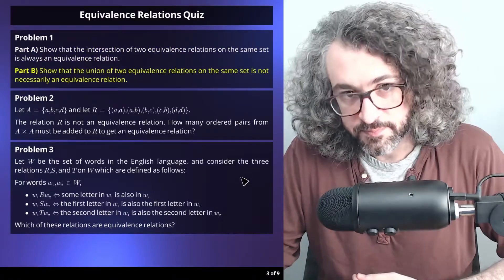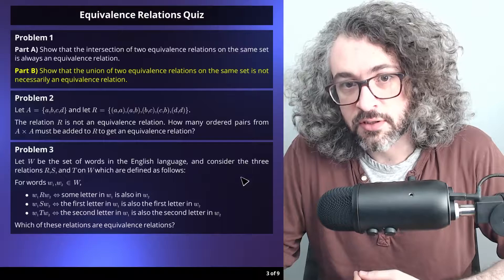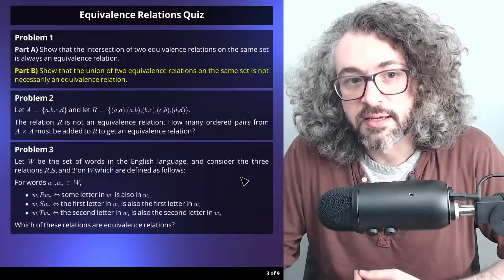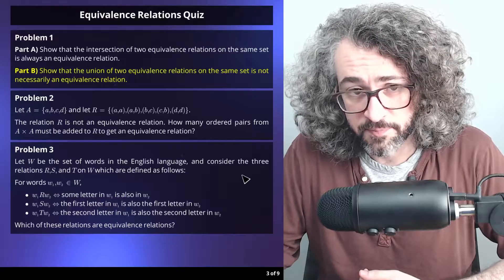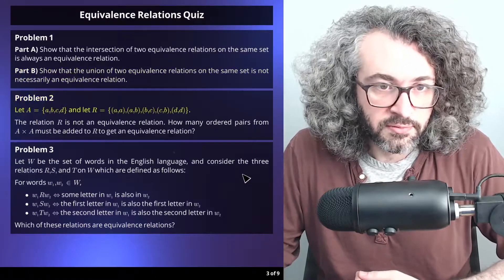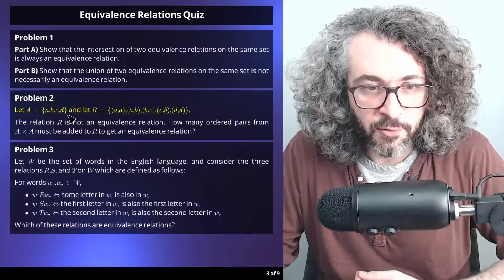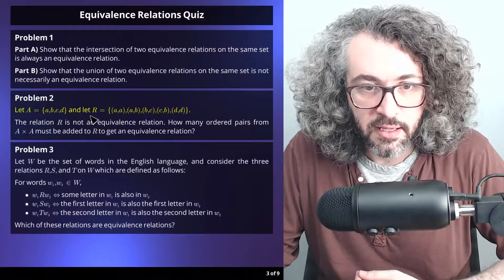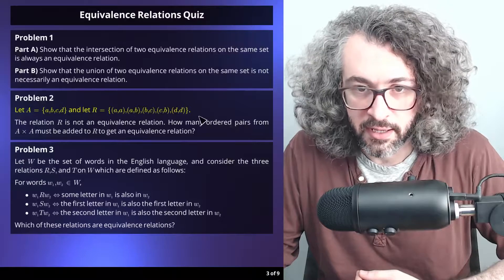Part B: Show that the union of two equivalence relations on the same set is not necessarily an equivalence relation. Problem 2: Let A be the four-element set that contains a, b, c, and d, and let R be this relation on A.